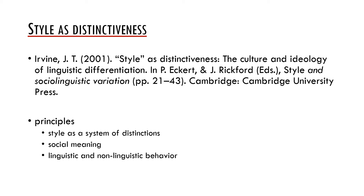Importantly, social meanings are not universal and it is quite common that different people ascribe certain variants to different social meanings. For example, some people may think of the use of a certain variant as a sign of intelligence, but others may consider it elitist or even arrogant. Style in this perspective is thus a rather dynamic process where the social meanings may even be negotiated during interactions.